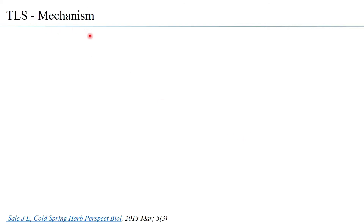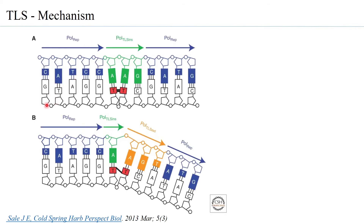Looking at the general mechanism: until the replicative polymerase reaches the adduct — here a thymidin dimer — it synthesizes normally. From that point, the replicating polymerase is removed and there is a polymerase switch to a translesion synthesis polymerase. The TLS polymerase comes, binds, and adds either the correct nucleotides against the thymidin dimer, or if it is an oxo-G it would add a C or an A, extending one or two nucleotides. Thereafter there is again a polymerase switch back to the normal replicating polymerase.